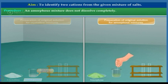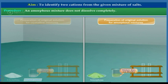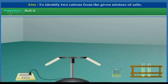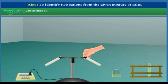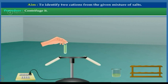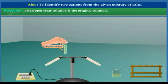An amorphous mixture does not dissolve completely. Boil the solution, then centrifuge it. The upper clear solution is the original solution.